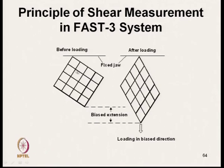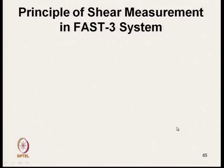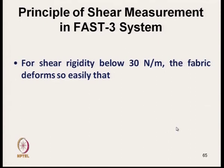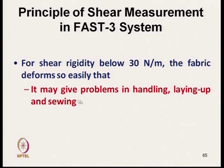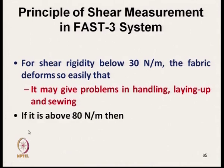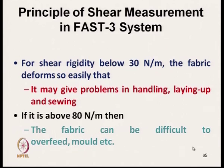In the bias direction — neither warp nor weft — after applying a certain load, the bias extension can be calculated. If shear rigidity is below 30 Newton per meter, the fabric deforms so easily that it creates problems in handling, laying up during stitching, cutting, and sewing operations. If shear rigidity is very high — above 80 Newton per meter — then the fabric can be difficult to overfeed. So during the stretching operation, this gives an idea of the shear characteristics.